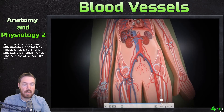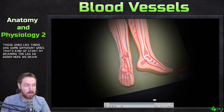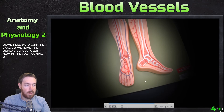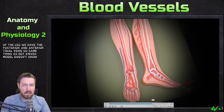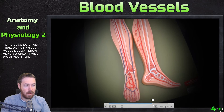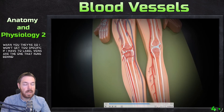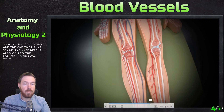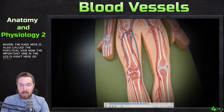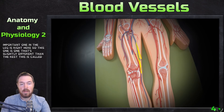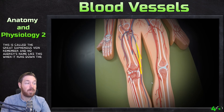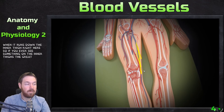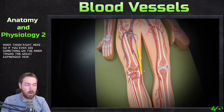Draining the leg: in the foot we have the dorsal venous arch. Coming up the leg we have the posterior and anterior tibial veins. The one running behind the knee is the popliteal vein. An important one slightly different from the rest is the great saphenous vein — no artery is named like this. It runs down the inner thigh, so anything on the inner thigh is the great saphenous vein.